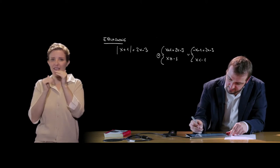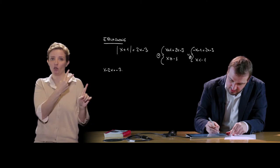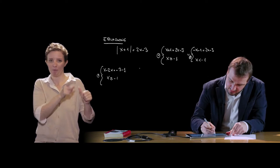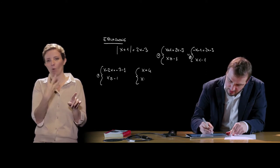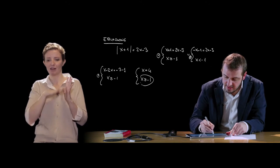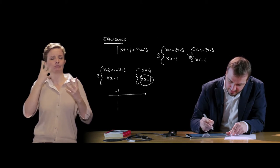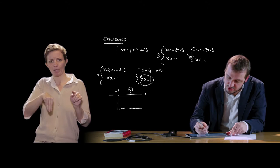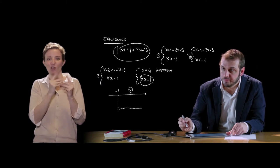The first system gives x - 2x = -3 - 1 with x ≥ -1, so -x = -4, thus x = 4. We must verify that this value falls within the domain where we study this equation, i.e. x ≥ -1. On the number line, -1 is our boundary; x = 4 falls in that region and is therefore a valid solution.